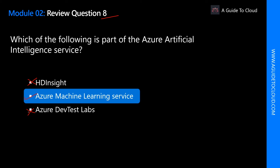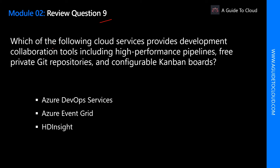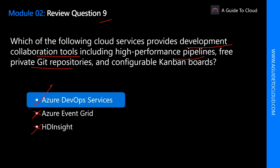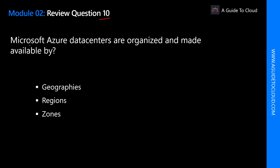Which of the following cloud services provides development collaboration tools, including high-performance pipelines, free private Git repositories, and configurable Kanban boards? The correct answer is Azure DevOps services, because Azure DevOps services includes development collaboration tools including high-performance pipelines, free private Git repositories, and configurable Kanban boards.